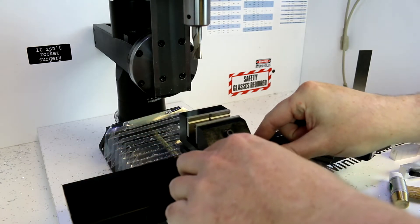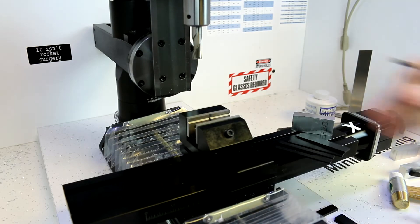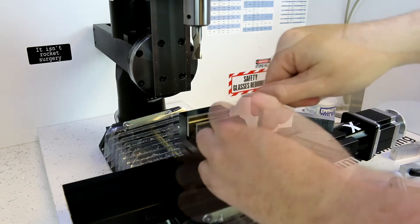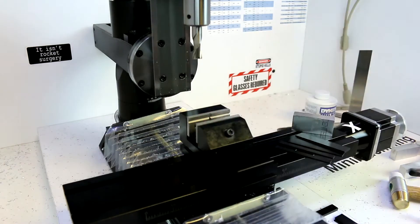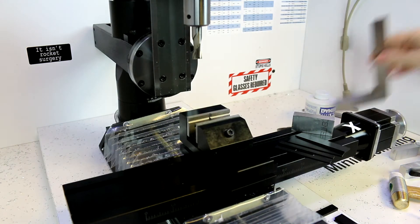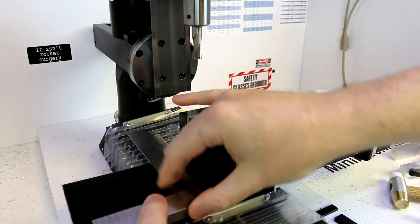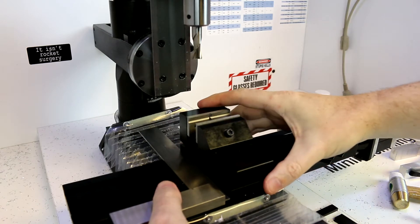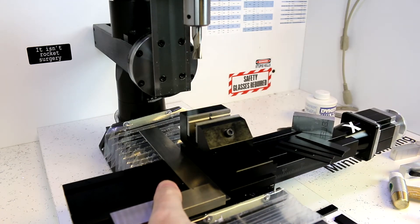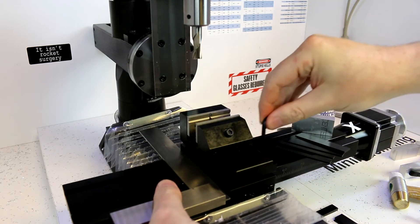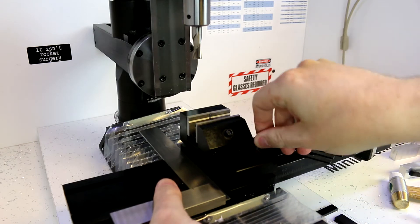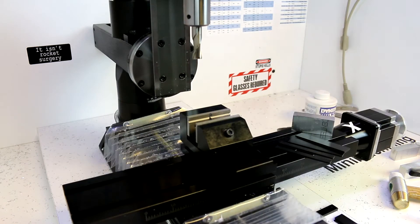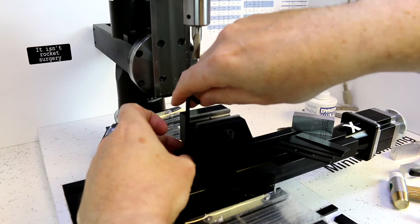We're going to try to go square, so put one clamp on and snug it down. It doesn't need to be super tight. Next we take our square and line it up with the side of the vice. We can tighten that down a little bit more.